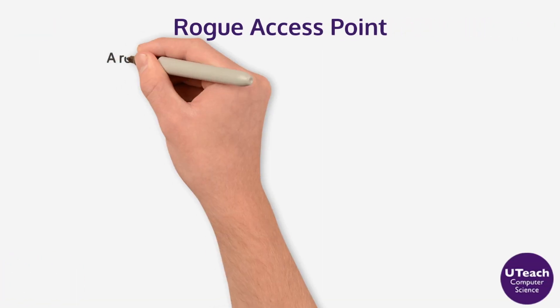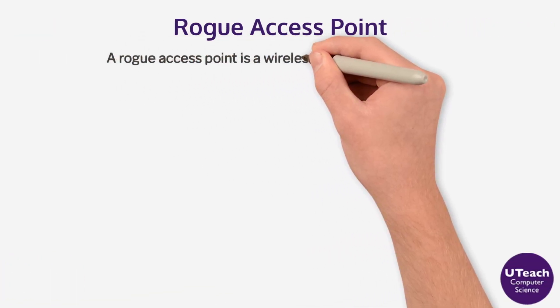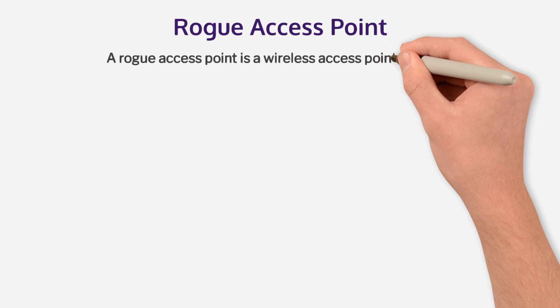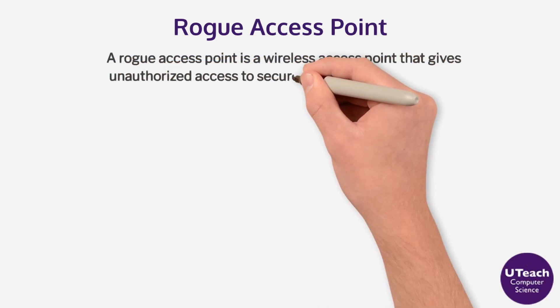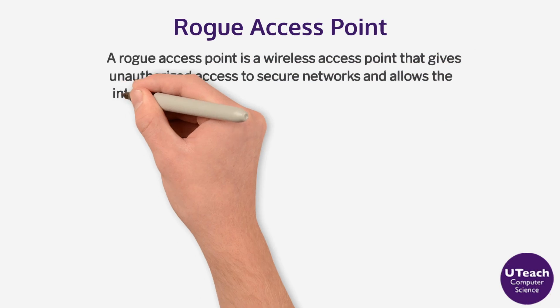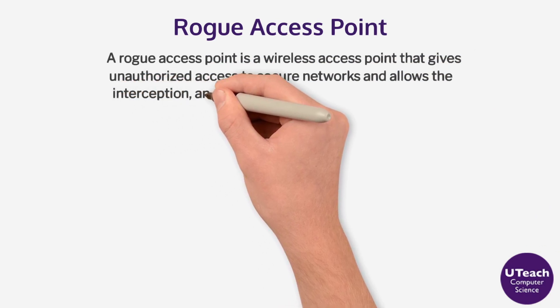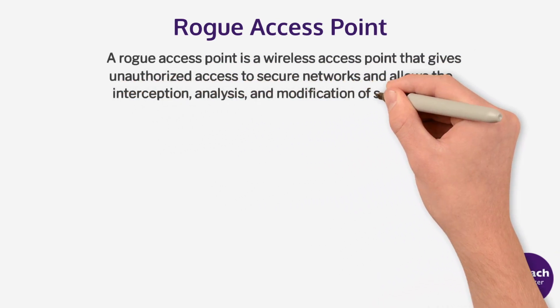A rogue access point is a wireless access point that gives unauthorized access to secure networks and allows the interception, analysis, and modification of secure data.